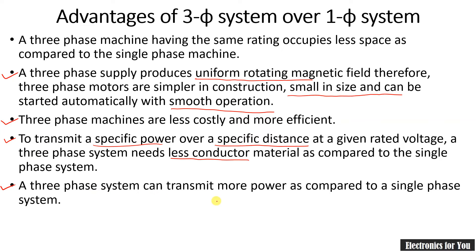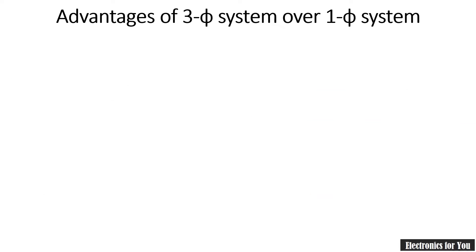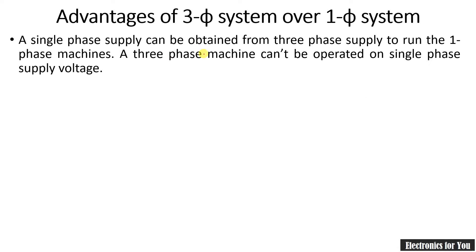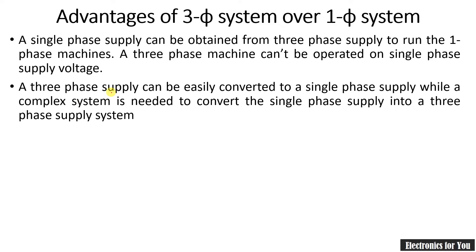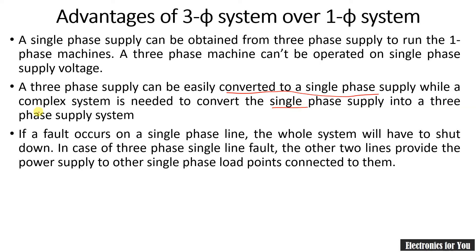A three-phase system can transmit more power as compared to a single-phase system. Additionally, a single-phase supply can be obtained from a three-phase supply, so a single-phase motor can be run with the help of a three-phase supply, but the reverse is not possible. A three-phase system can be easily converted to single-phase, while a complex system is required to convert single-phase supply into three-phase supply.